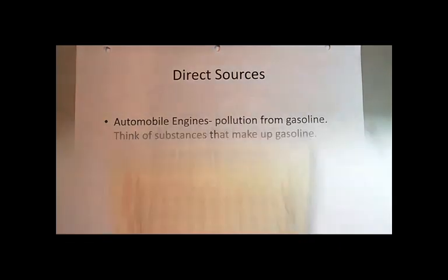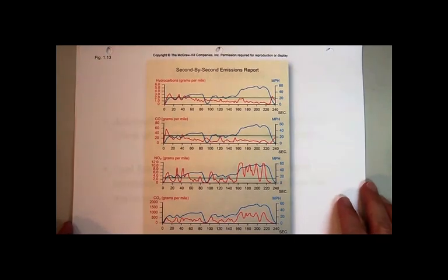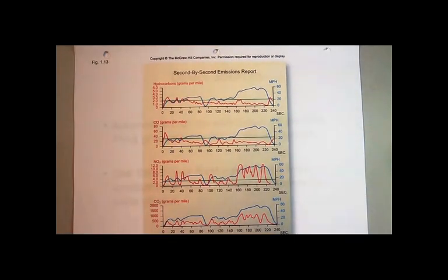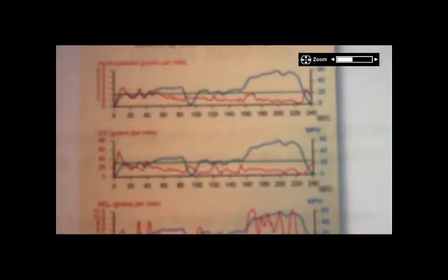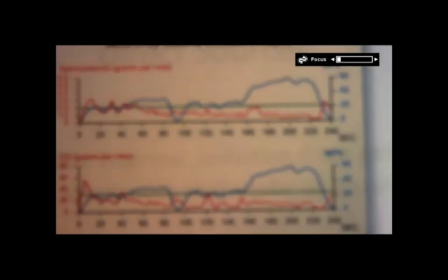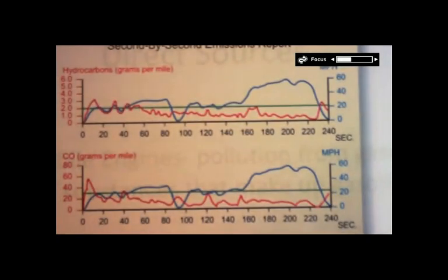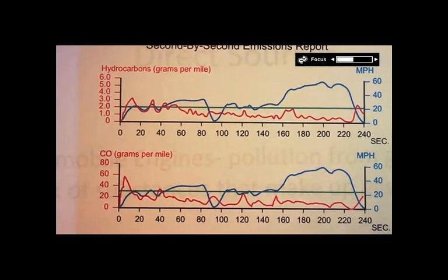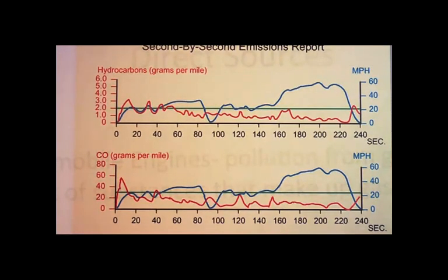Last time we were looking at this emissions report — it was sort of out of focus — so we get a chance to take a look at it again. When the EPA is reporting hydrocarbons as a pollutant, they call it VOCs, which stands for Volatile Organic Compounds, with hydrocarbons being the particular type of volatile organic compound. You know it's volatile because if you've ever pumped gas and spilled a little bit, you recognize that it evaporates very, very quickly — that's why it's called volatile.